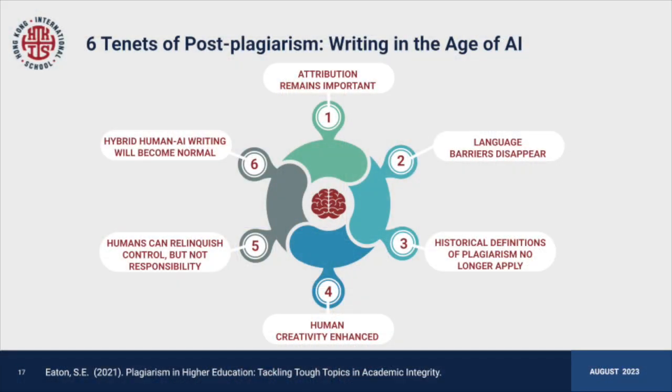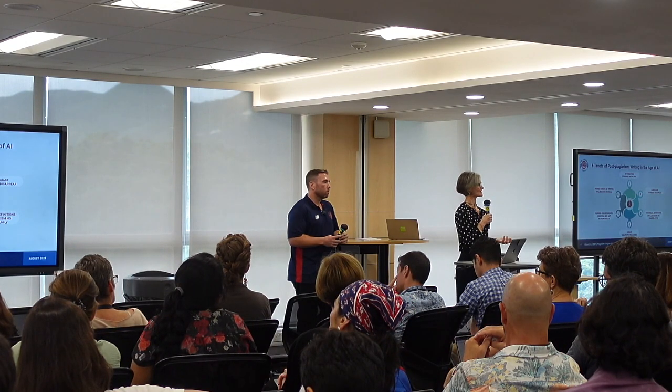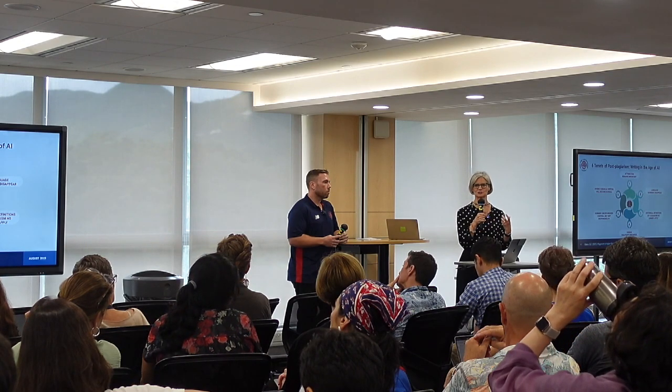Her point number one is that attribution — meaning citing — remains important, to be willing to admit something isn't entirely yours and say where it's coming from. Number two is that language barriers are going to largely disappear as generative AI tools enable us to move between different languages, really facilitating second and third language learners to communicate fluently. Will it lessen human creativity? She believes no — it's an opportunity for humans to be exposed to new things, and humans will always be incredibly creative.